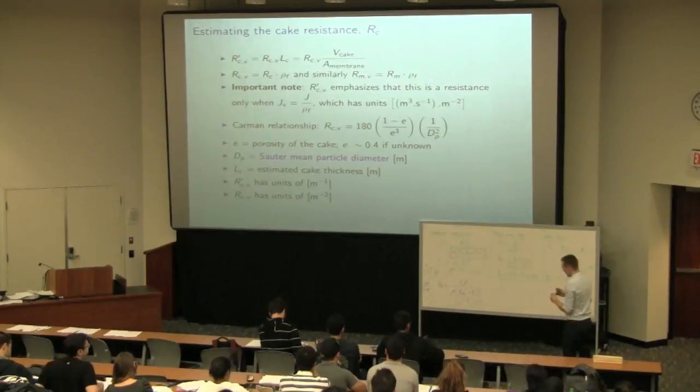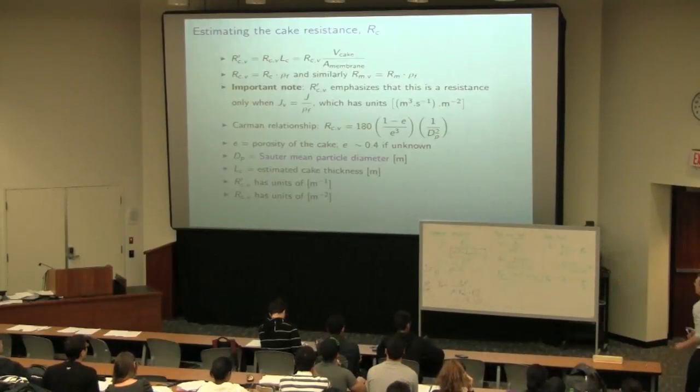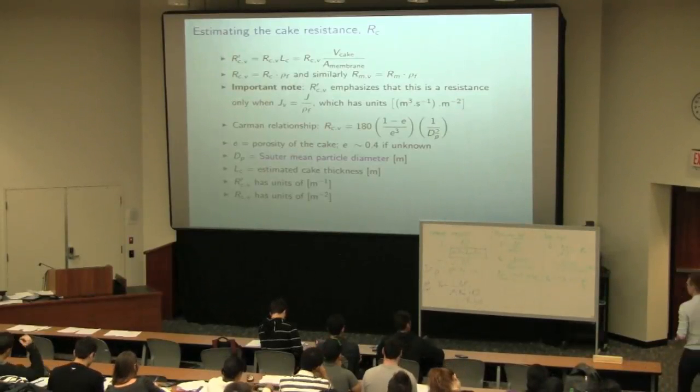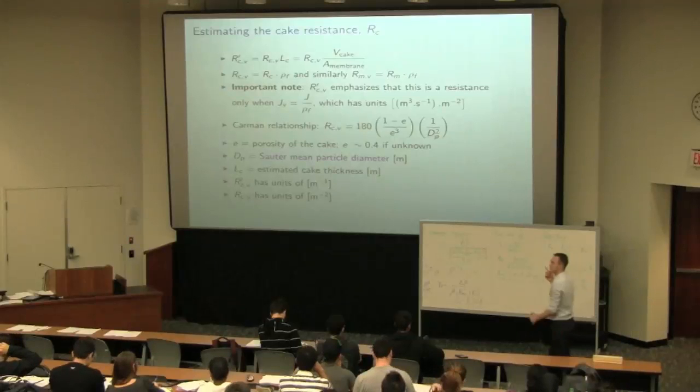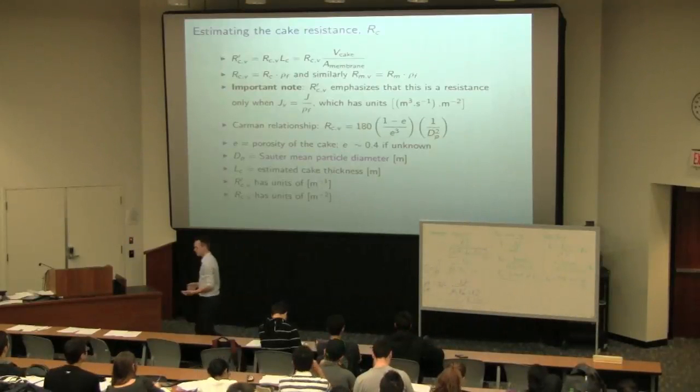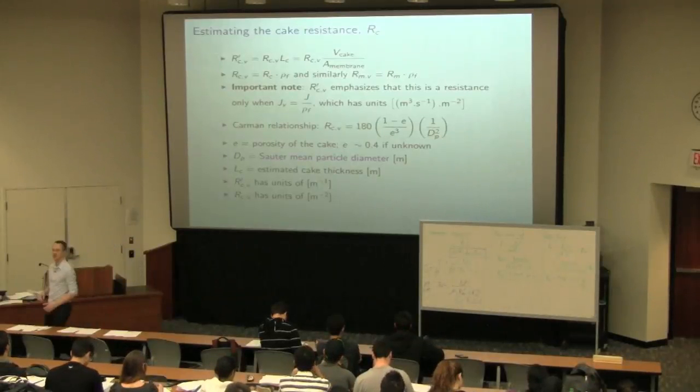So that Carman equation for RCV is an estimate of that resistance in the cake when we have the particle size band. So it does require us to know the particle size diameter. The Sauter mean diameter, I've given the link over there, but it comes back to that earlier class we had where we were estimating equivalent diameters.